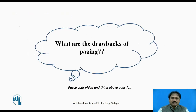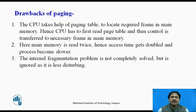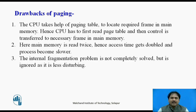The drawbacks of paging are: before reading a frame's data, we must first refer to the page table, which is kept in main memory. So the CPU has to read the page table first, then read the required frame. This means the CPU reads main memory twice to execute a process, increasing execution time and lowering speed. Secondly, the internal fragmentation problem is not completely resolved, because some pages may not fill an entire frame, leaving some space empty. This is generally ignored as it does not significantly affect processing.